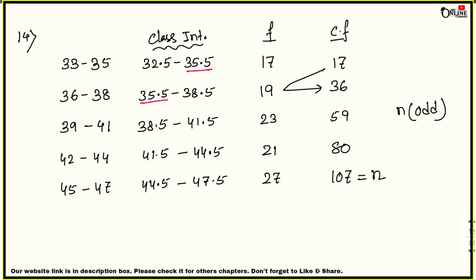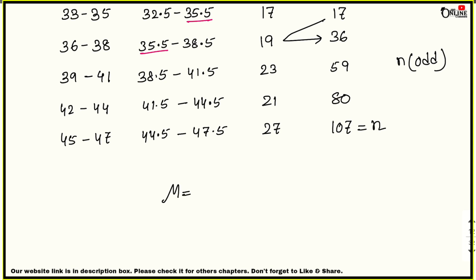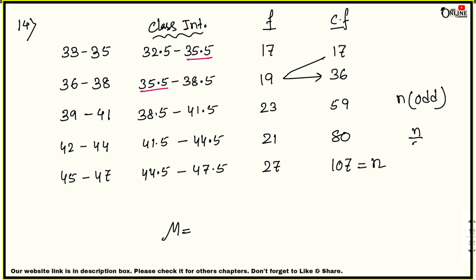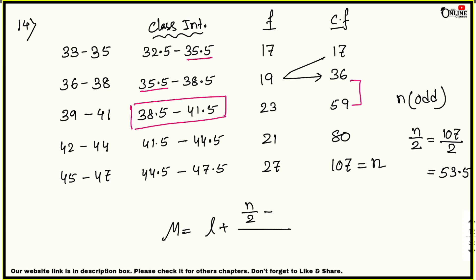When no class interval is given, you must distinguish between even and odd n. But when class intervals are given, the formula is the same. First find n/2 = 107/2 = 53.5. Looking at the cumulative frequency, 53.5 falls between 36 and 59, so the median class is 38.5–41.5. Apply the formula: Median = L + [(n/2 − CF) / f] × h.